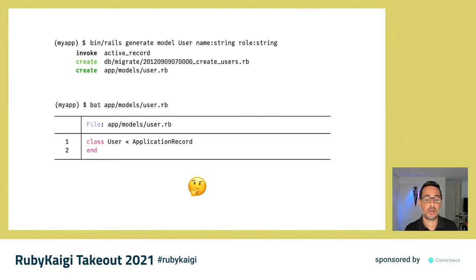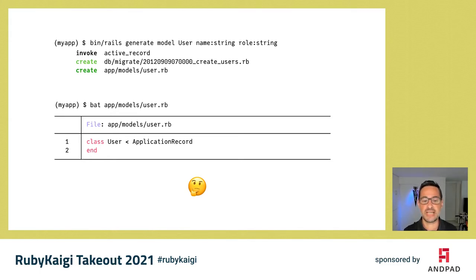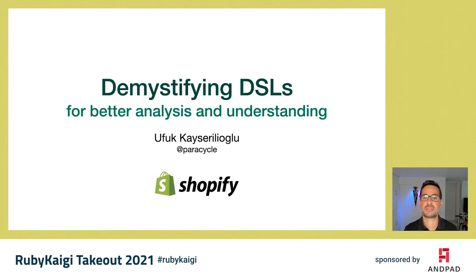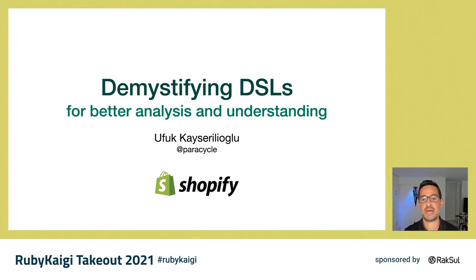Since the inner workings of what ActiveRecord was doing was opaque to me, it made me think there was some magic happening in the background. Nine years later, I now know that there is no magic. Anything close to magical about the whole thing is the power of the Ruby language and its capability to represent metaprogramming or domain-specific languages very effectively. So today we will be talking about DSLs with the aim of demystifying them. My name is Ufuk Kayser-Lolo and I'm an engineering manager on the Ruby and Rails infrastructure team at Shopify. You can reach me on social media using the handle Paracycle.